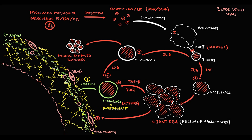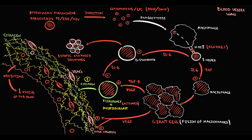Giant cells also begin to produce vascular endothelial growth factor, which increases the amount of vasa vasorum and smooth muscle cells in the blood vessel wall. As a result, the intima becomes very thick — now called neointima. The thicker the intima becomes, the smaller the radius of the blood vessel. The more narrow the blood vessel, the lower the blood flow through it, and thereby the lower the nutrient delivery to tissues. This is the major problem in giant cell arteritis.